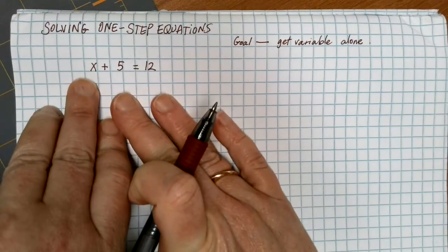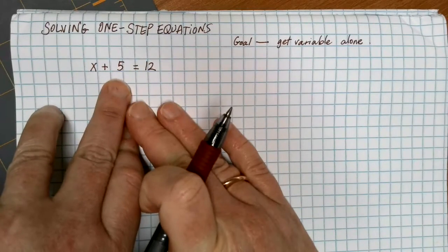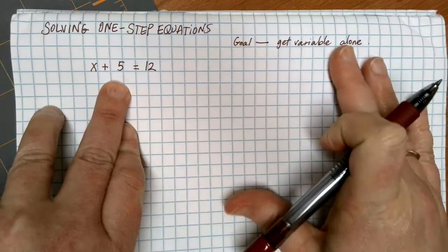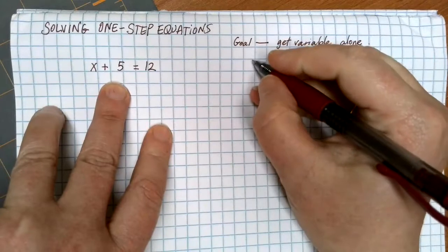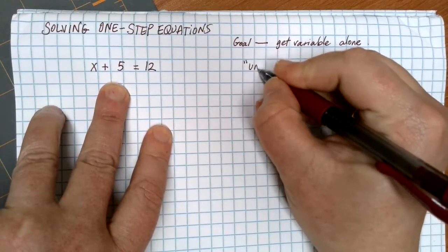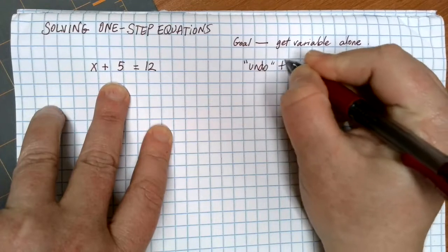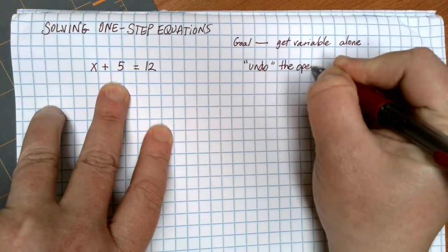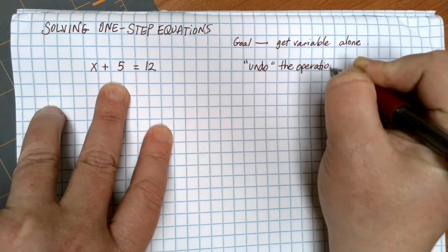Right now, on the same side of the x is this plus 5. In order to get the variable alone and move anything else, what we do is we are going to undo the operation that's there, and we're going to use the opposite operation.